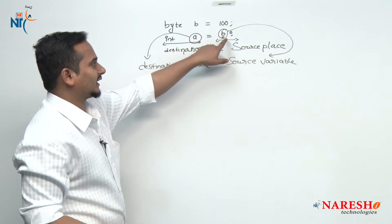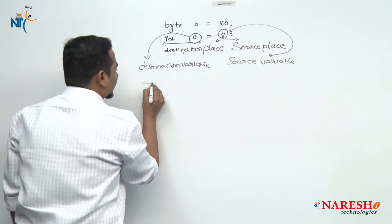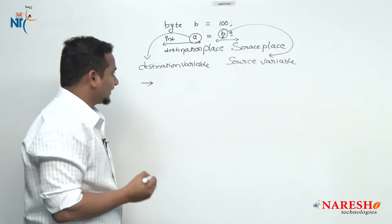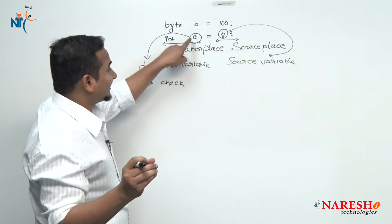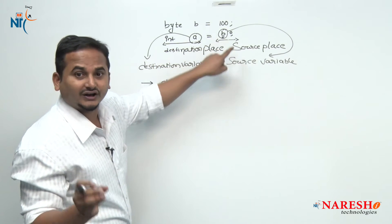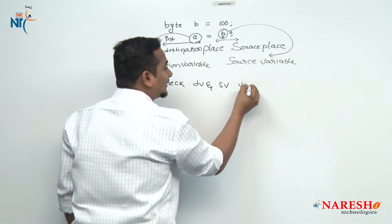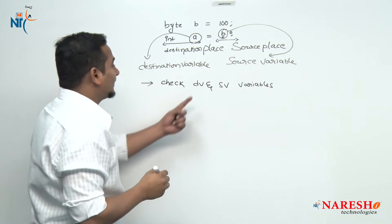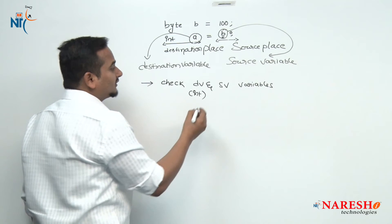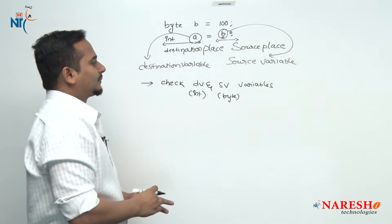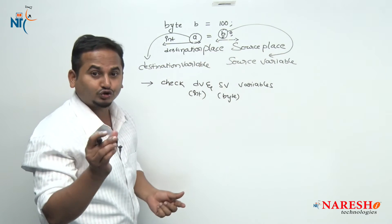Whenever we assign any value to a variable with the help of another variable, what type of functionalities are taken care of by the compiler? The first step: the compiler is going to check the destination variable type and the source variable type. Here the destination variable type is int and the source variable type is byte.